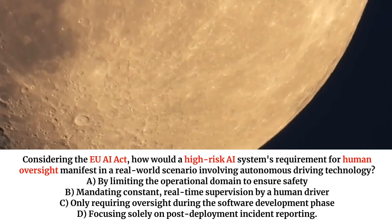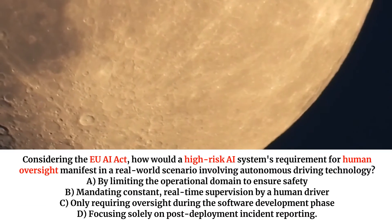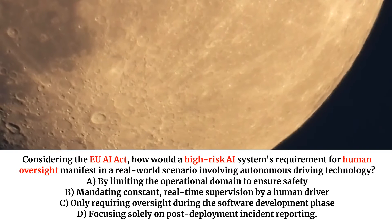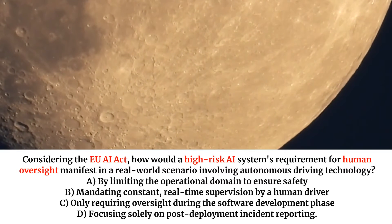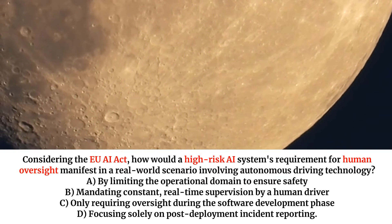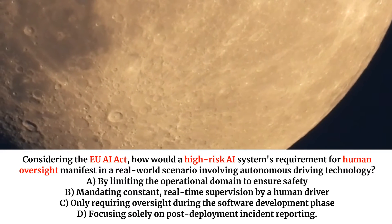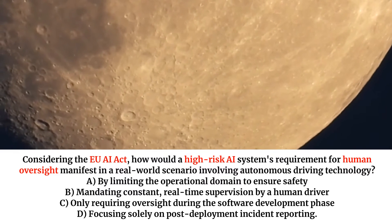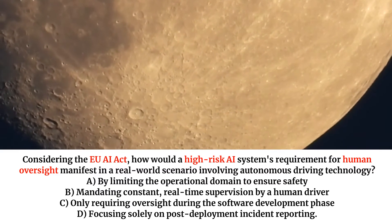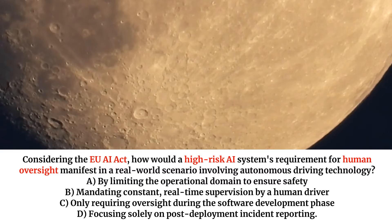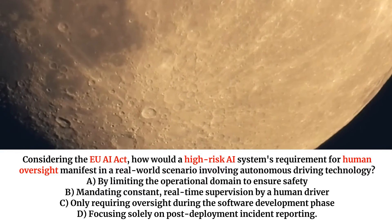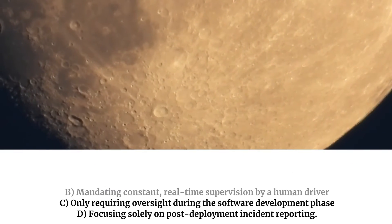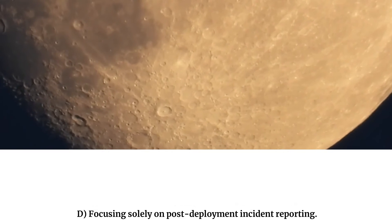Considering the EU AI Act, how would a high-risk AI system's requirement for human oversight manifest in a real-world scenario involving autonomous driving technology? A. By limiting the operational domain to ensure safety. B. Mandating constant, real-time supervision by a human driver. C. Only requiring oversight during the software development phase. D. Focusing solely on post-deployment incident reporting.